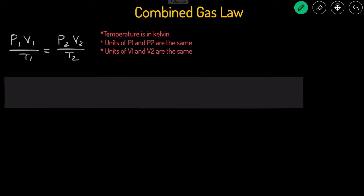Some guidelines for using this equation: temperature has to be in degrees Kelvin. To get to degrees Kelvin, it's degrees Celsius plus 273. The units of pressure 1 and pressure 2 have to be the same, and the units of volume 1 and volume 2 have to be the same.